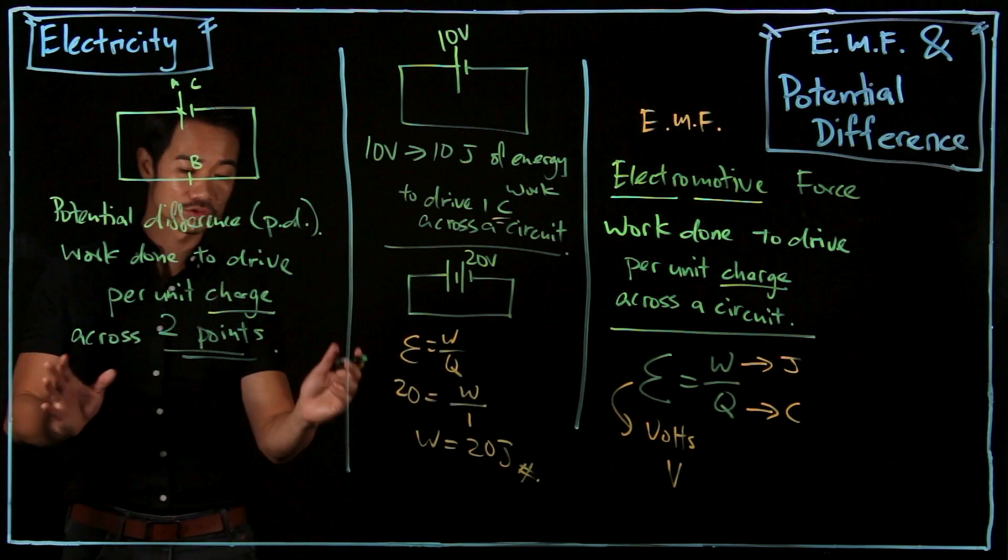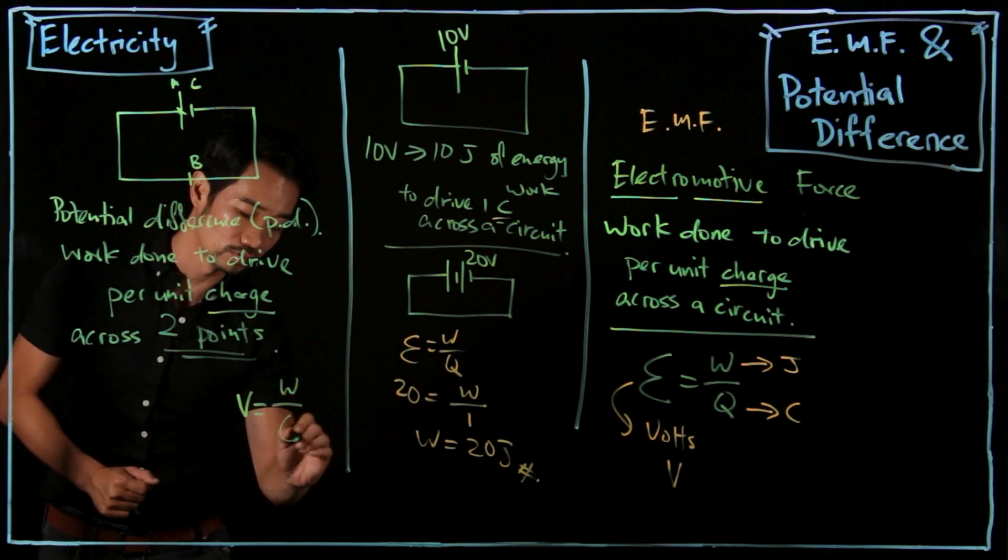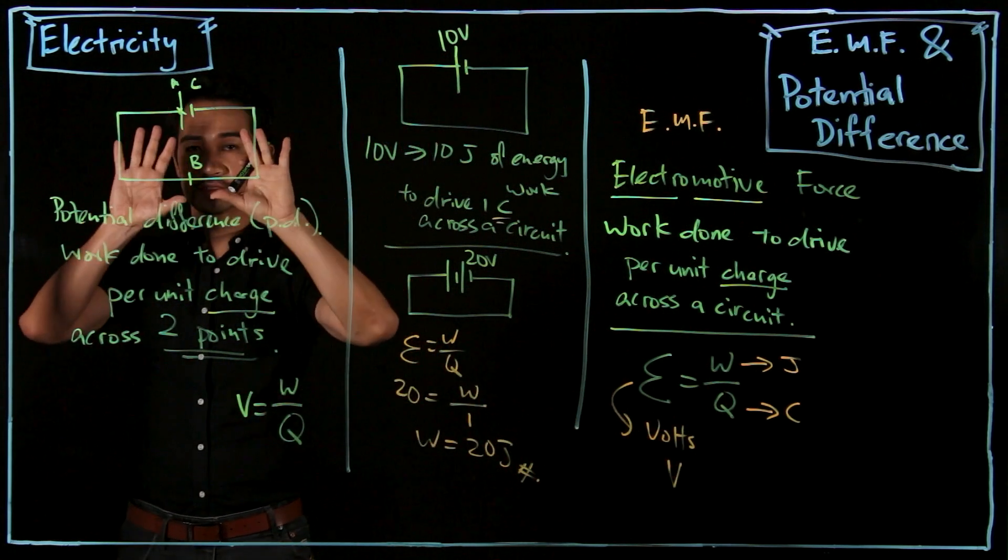So technically their formula is also the same. PD we use V. It equals W over Q.